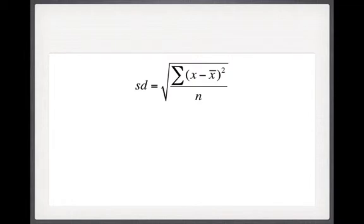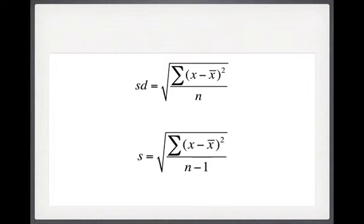Apologies for including equations here. The standard deviation of a set of values is calculated by taking differences from the mean, squaring them, summing them, dividing by the number of values, and taking the square root. The sample standard deviation uses the same formula except the denominator is n minus 1 instead of n, and this gives an unbiased estimator of the population standard deviation. You don't need to memorize this — it's just for those who are interested.